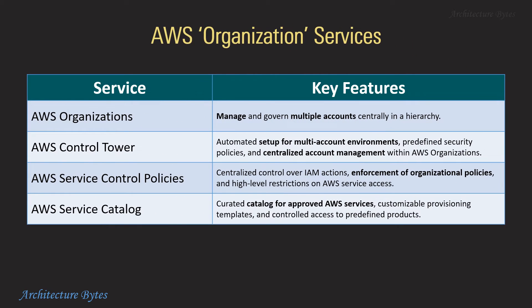AWS organization-related services: AWS Organizations is used to manage and govern multiple accounts centrally in a hierarchy. Control Tower provides automated setup for multi-account environments. Service Control Policies are for enforcement of organizational policies. Service Catalog is a catalog for approved AWS services.